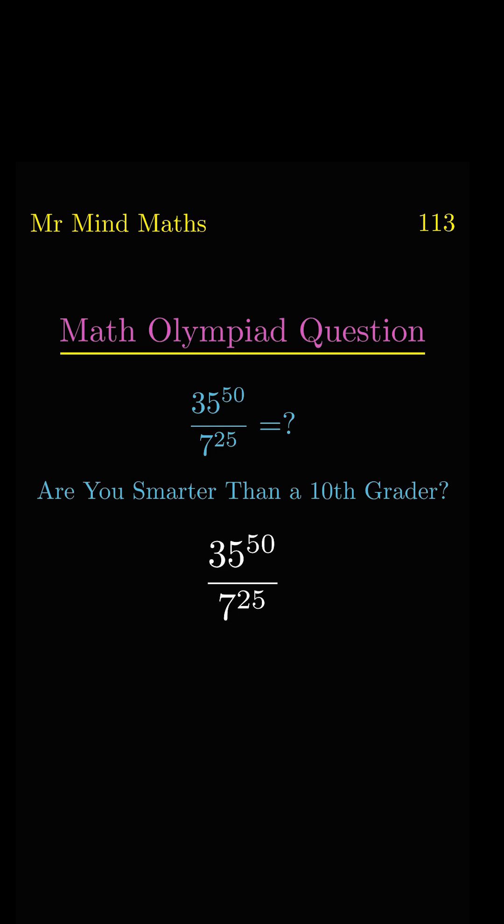In the numerator, we have 35 to the power of 50. First, we will split the exponent 50 into 25 plus 25, so we can write 35^50 as 35^25 times 35^25.